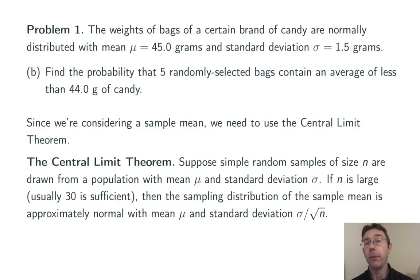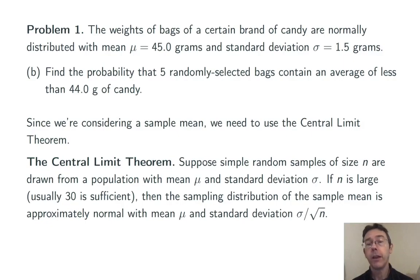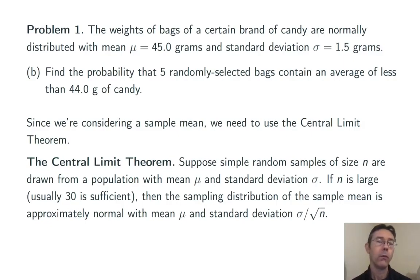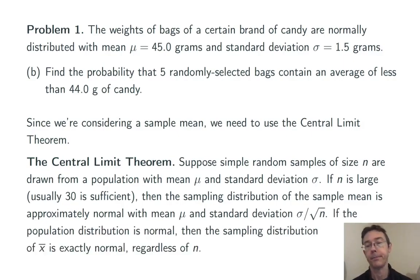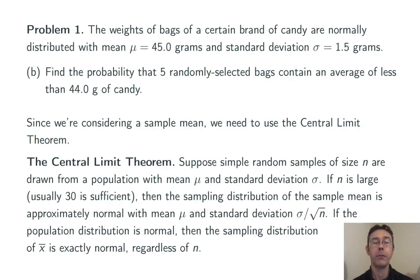Suppose a simple random sample of size n is drawn from a population with mean mu and standard deviation sigma. If n is large — and usually 30 is sufficient — then the sampling distribution of the sample mean x-bar is approximately normal with mean mu and standard deviation sigma over the square root of n. So roughly speaking, x-bar has the same center but less spread than the population. Moreover, if the population distribution is normal, then the sampling distribution of x-bar is exactly normal, regardless of the sample size n.